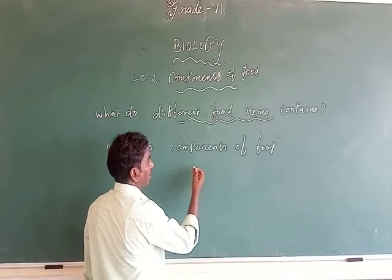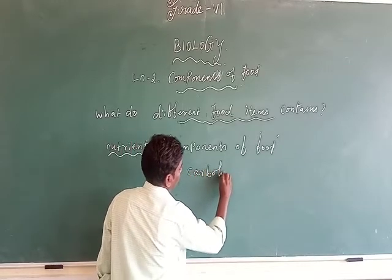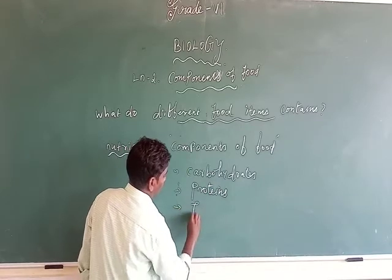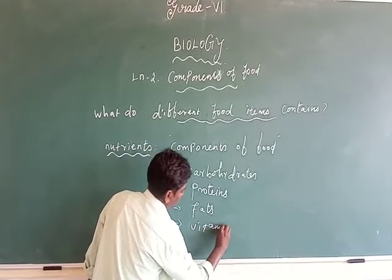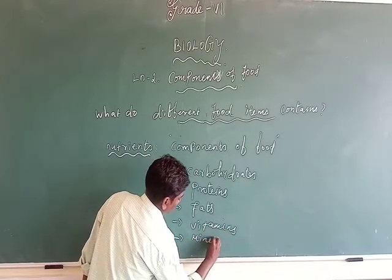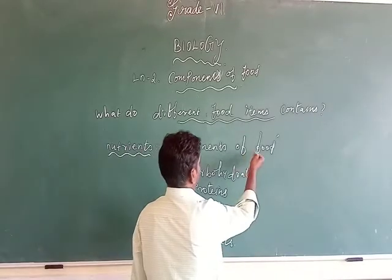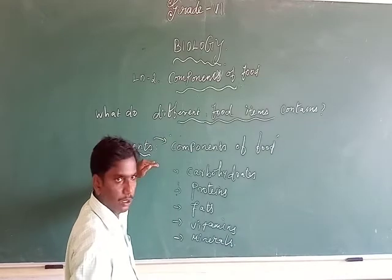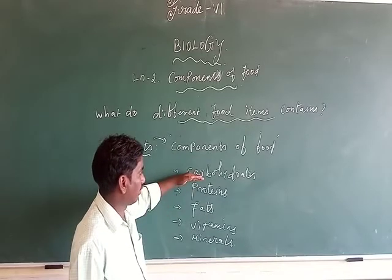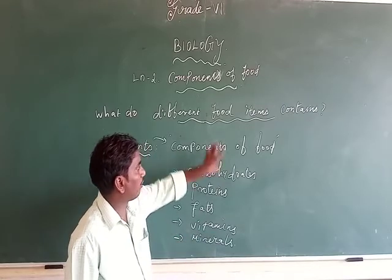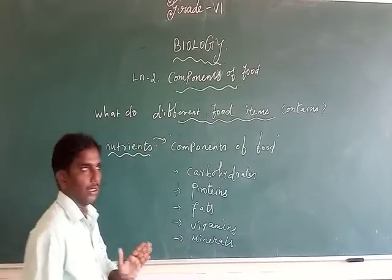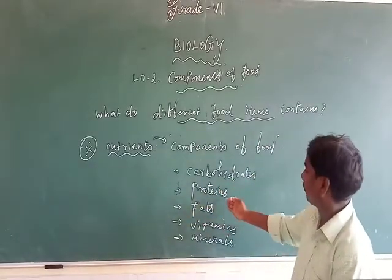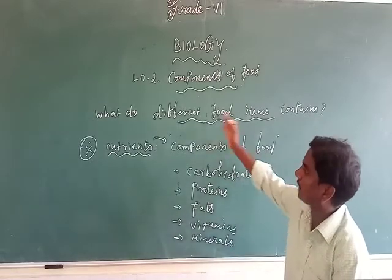The components of food — that is, the nutrients — include carbohydrates, proteins, fats, vitamins, and minerals. These are called the components of food, and they are also known as nutrients. Each of these nutrients is very important for us. The components of food such as carbohydrates, proteins, fats, vitamins, and minerals — these are the components of food, and they are called nutrients. Nutrients means nothing but the components of food.